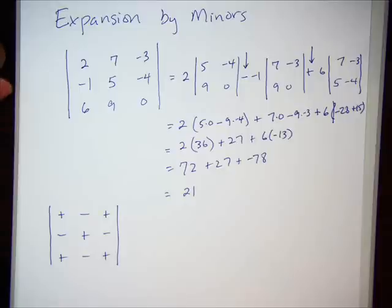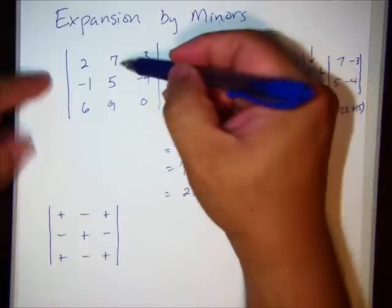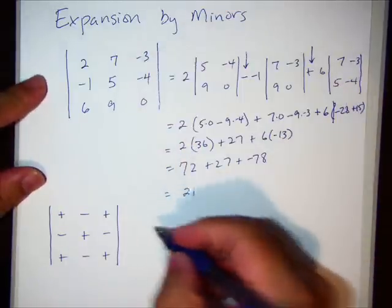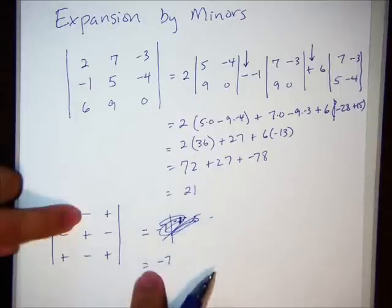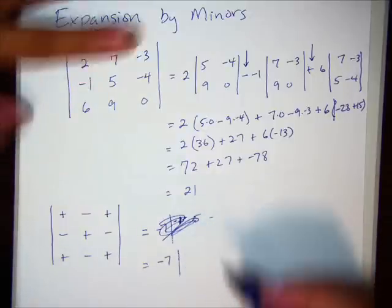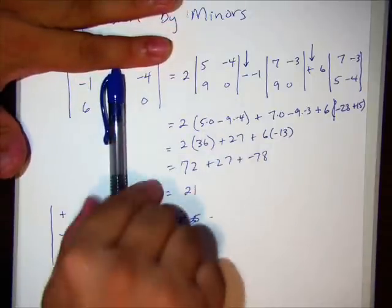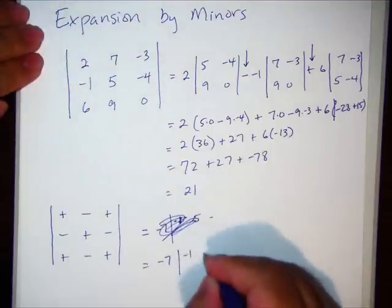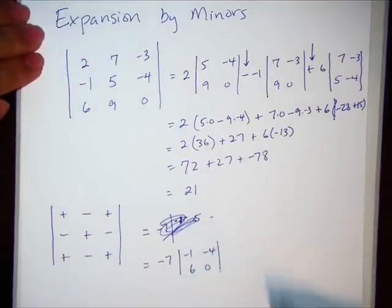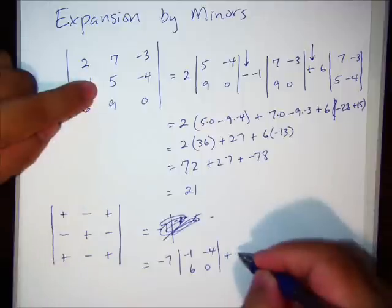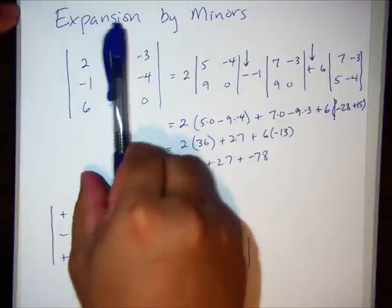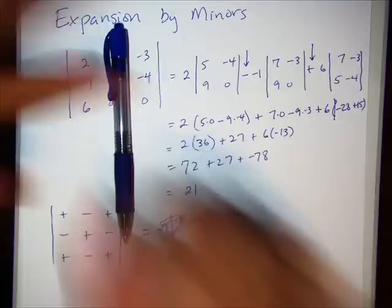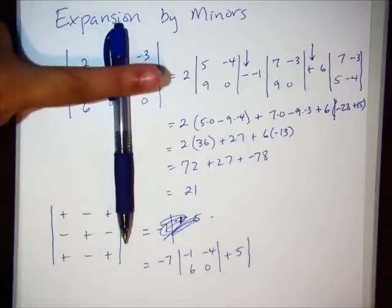I know that I'm explaining this poorly. So you don't have to complain about it. I know I'm doing a bad job. However, if I were to expand on 7, 5, 9, let's write that out here. If I were to expand on 7, 5, 9, negative 7, negative because of this negative, with the determinant negative 1, negative 4, 6, 0. Plus the 5. And what's going to be left? See how hard it is to explain that one. 2, negative 3, 6, 0.